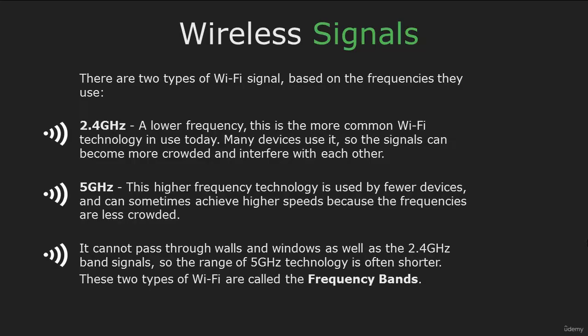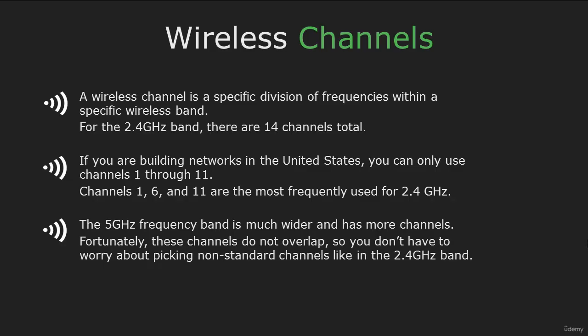You will also need to know what a wireless channel is. For the 2.4 GHz band there are 14 channels, but if you are building networks in the US, you can only use channels 1 through 11. You can also use the 5 GHz frequency band, which is much wider and has more channels. These channels do not overlap.